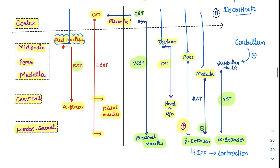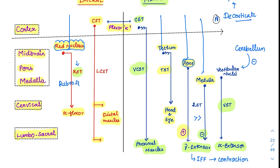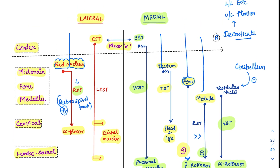Now let's look at the other tract. The pontine reticulospinal tract causes gamma extensor activity and is more dominant than the medullary reticulospinal tract. The rubrospinal tract is named for the red nucleus — 'rubro' means red — while reticulospinal refers to the pontine and medullary tracts. The pons is the dominant influencer of gamma extensors, and it acts all the way down to the lower limb. So the lower limb goes for extension in decorticate rigidity.